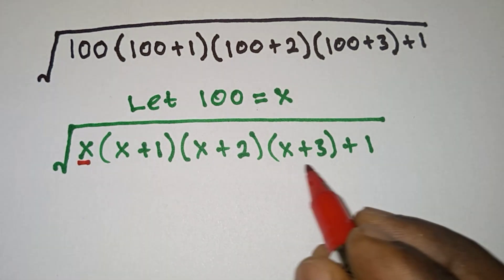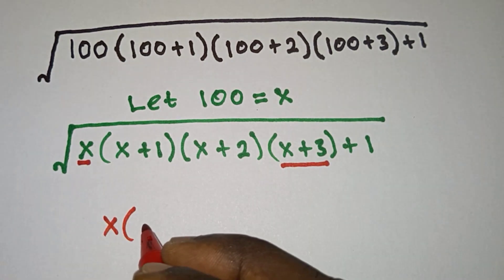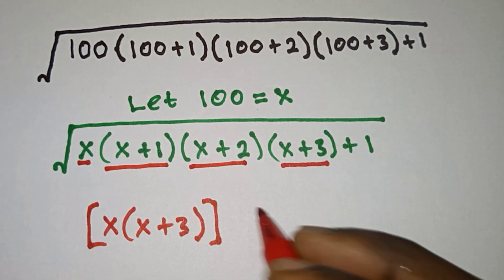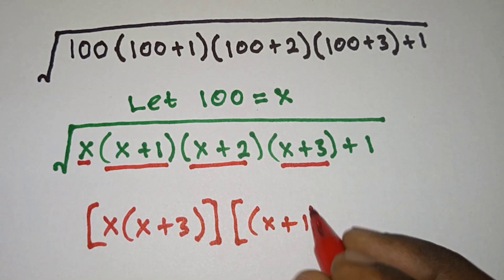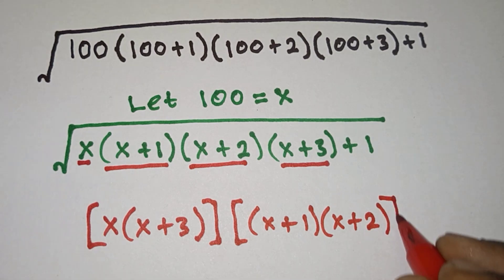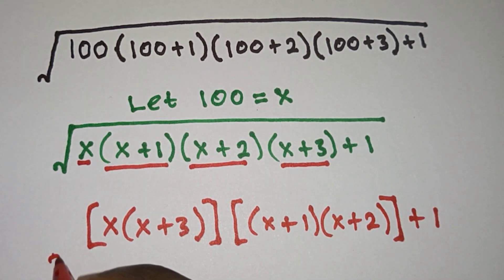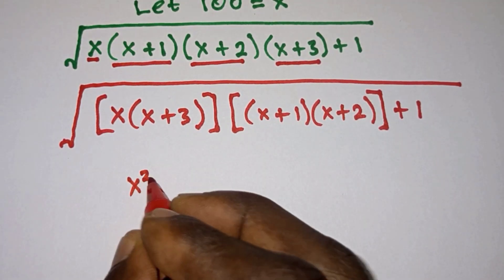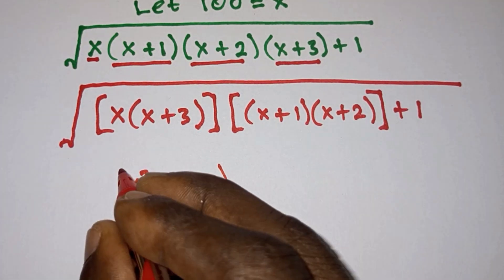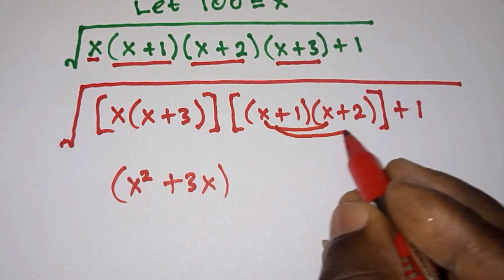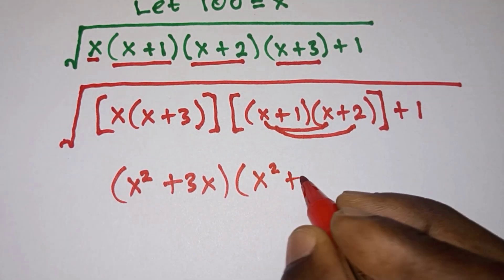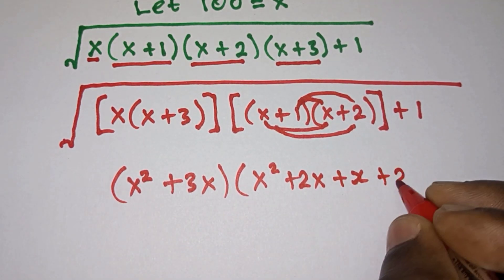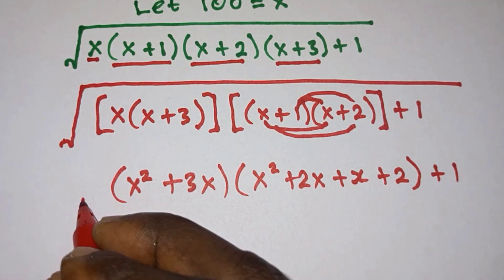From here we will multiply x by x plus 3, so we're going to have x times x plus 3. Then we also multiply x plus 1 by x plus 2, don't forget the 1 over there. Now let's distribute: x times x plus 3 gives x squared plus 3x, and x plus 1 times x plus 2 gives x squared plus 2x plus x plus 2.